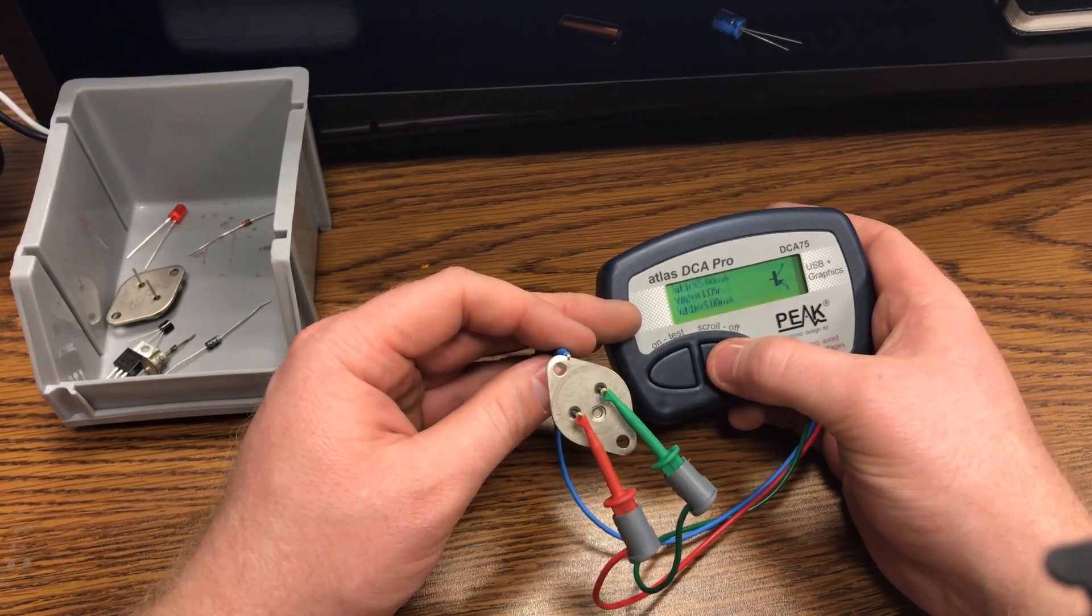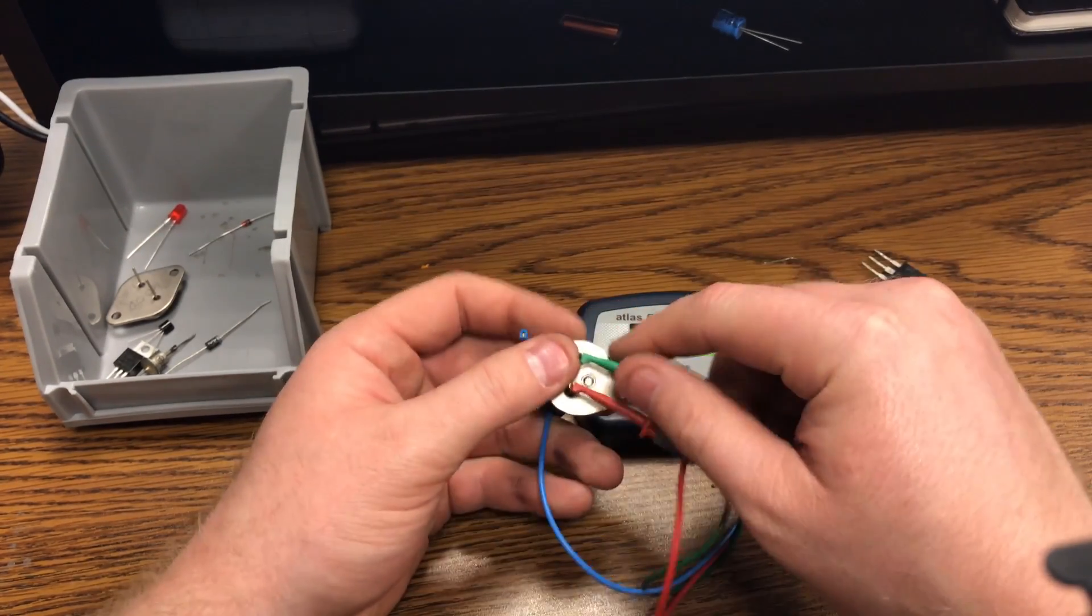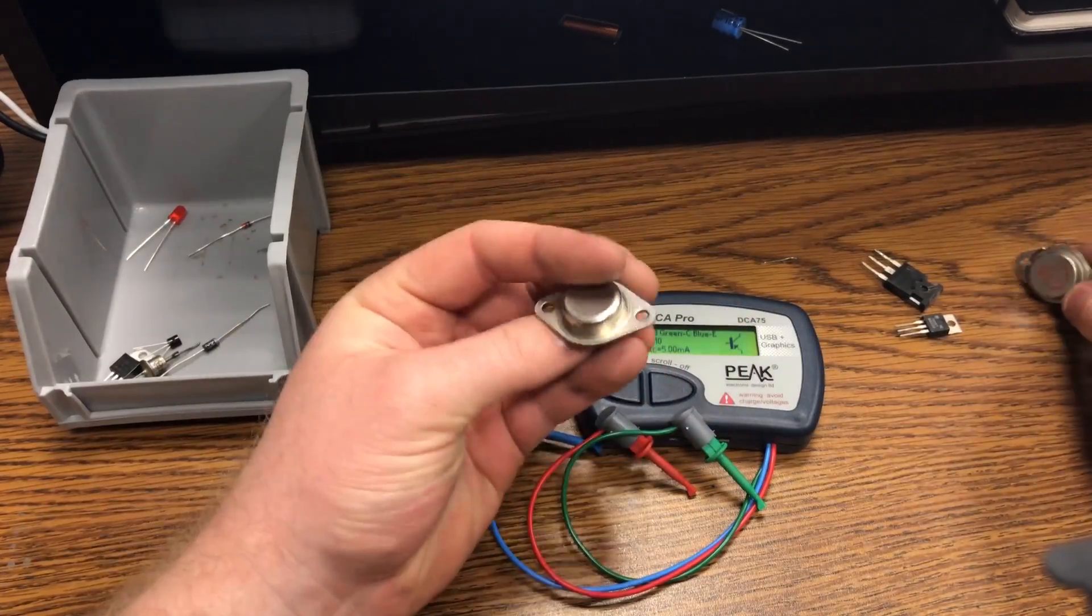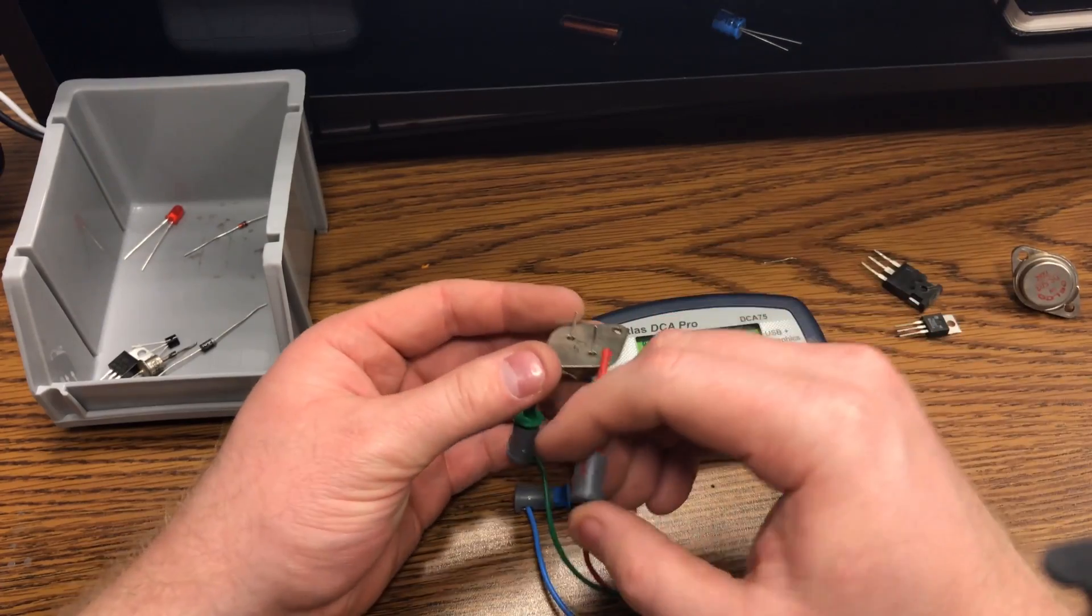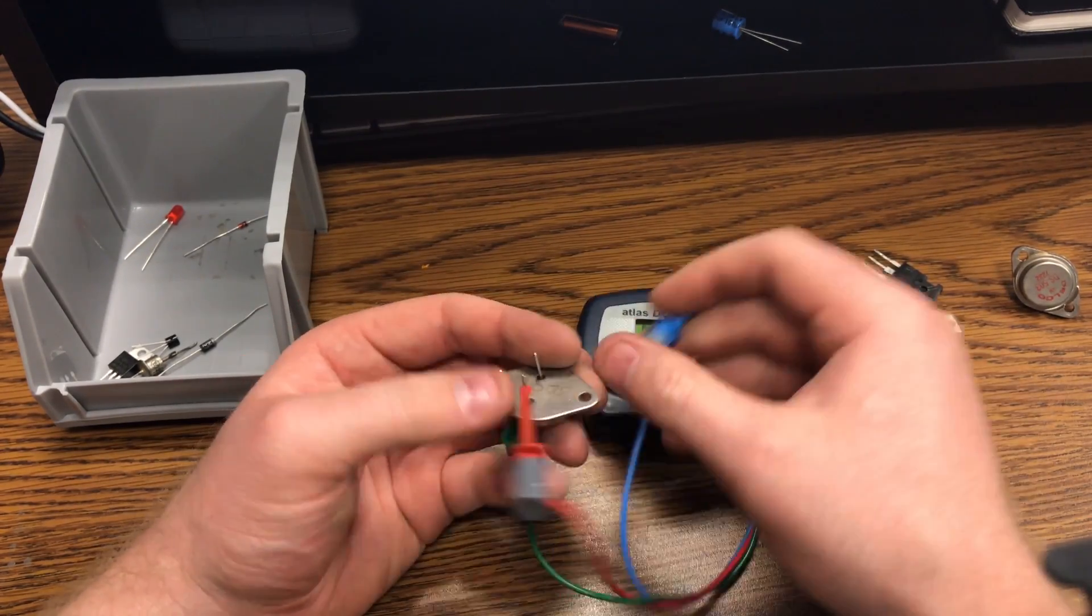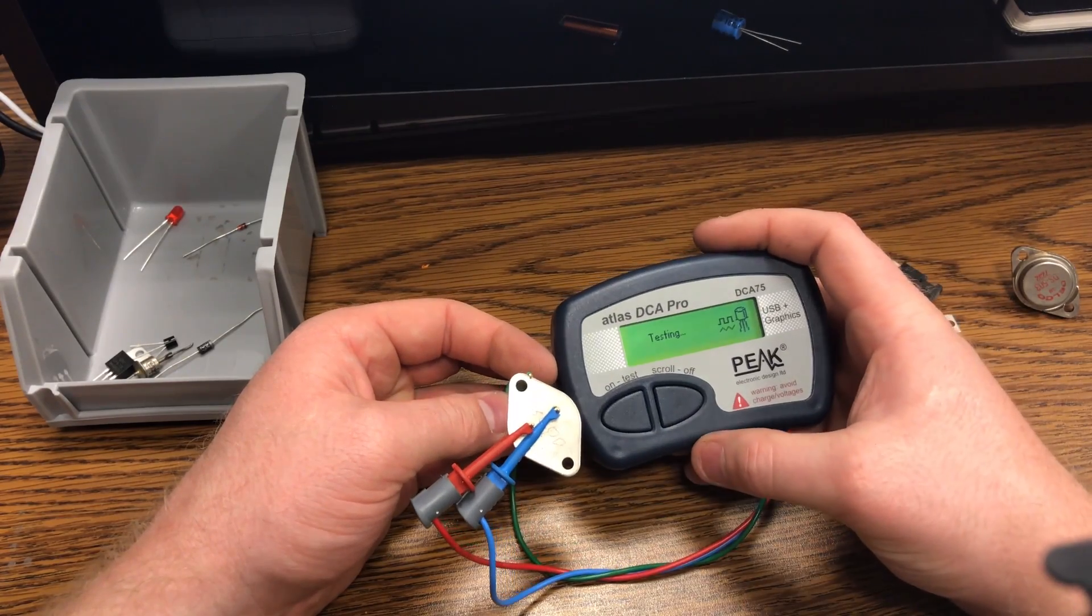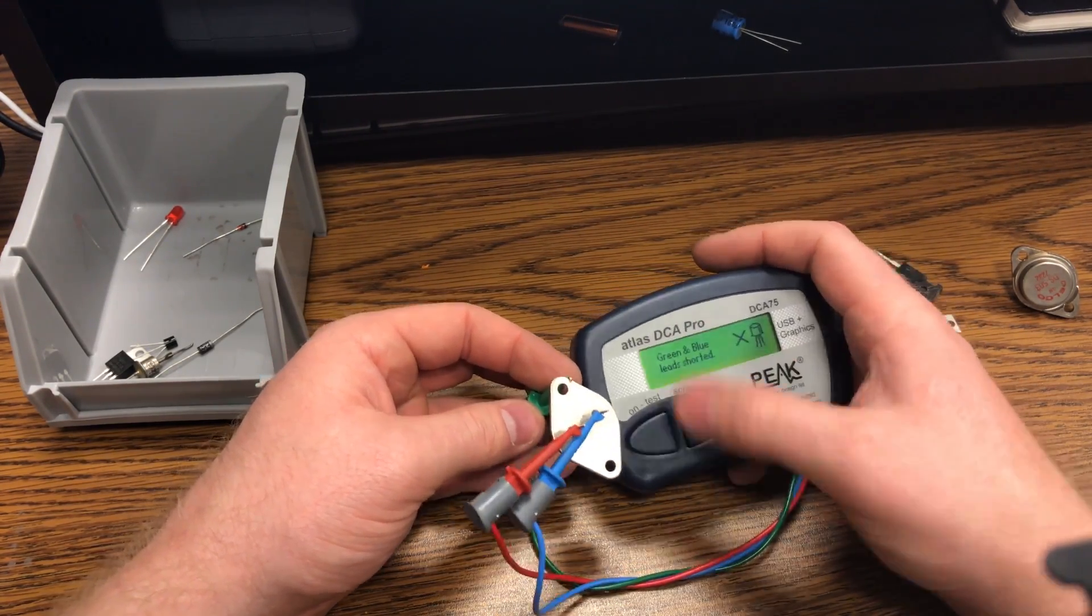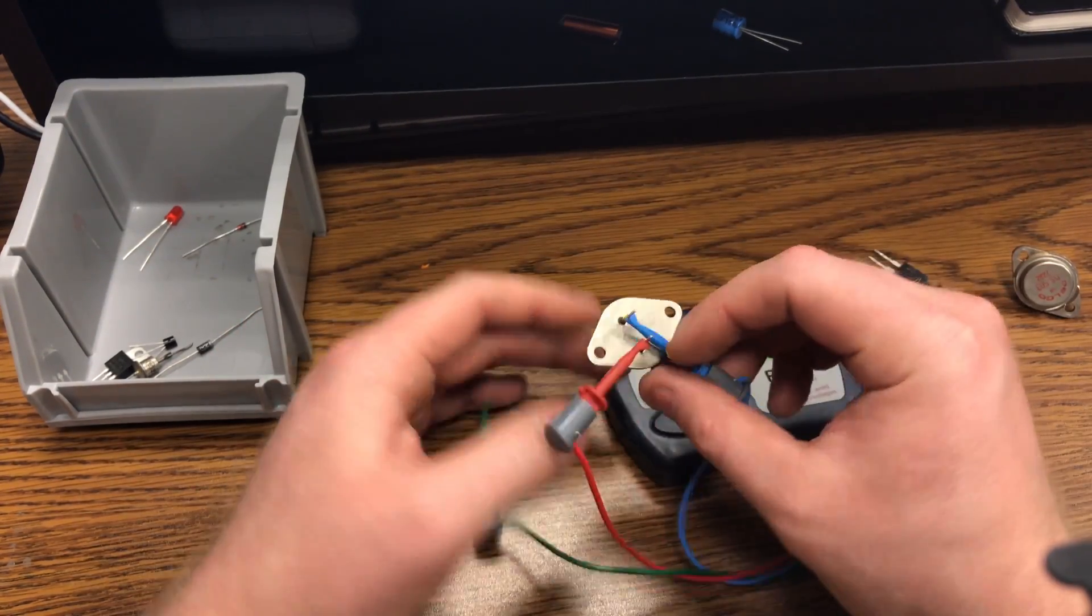And let me show you what happens if you have a bad part. So I know this one is bad. So hook it up just the same way I just did with that one. So it knows that the green and the blue leads are shorted, so there's a bad part.